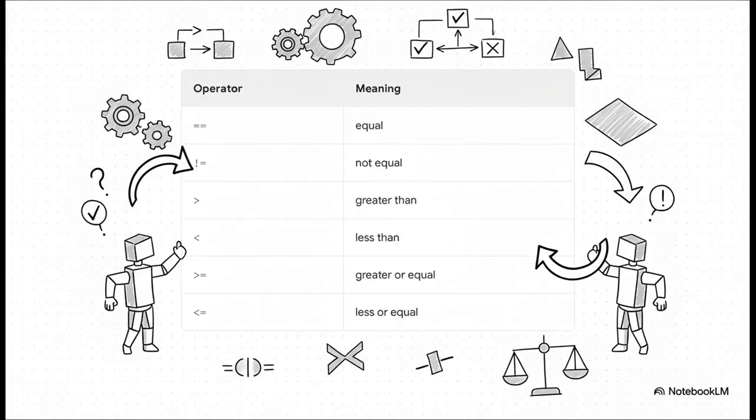This black and white logic is the absolute bedrock of how computers think. So how do we actually build these true or false questions? We use these guys, the comparison operators. These are your tools for comparing things. They let you check if two values are equal or not equal or if one is bigger than the other. These are the fundamental building blocks for all of your program's decisions.